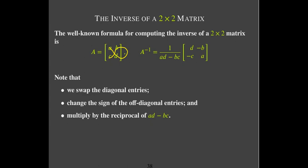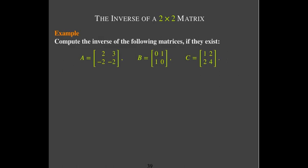We can't divide by zero, so if AD minus BC equals zero, then A-inverse cannot exist — the matrix cannot be invertible. Let's apply this formula to three examples of 2×2 matrices and calculate their inverses if they exist.